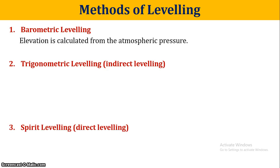In barometric leveling, we use atmospheric pressure at a point to find its elevation. As elevation increases, pressure decreases. So using the pressure at that point, we can find the elevation approximately. That is barometric leveling — the atmospheric pressure is calculated using a barometer device.